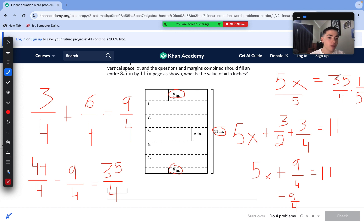After some cross-reducing, this turns into a 7. This turns into a 1. And then, 7 times 1 is 7. 4 times 1 is 4. We are left with x equals 7-fourths of an inch, which makes sense.